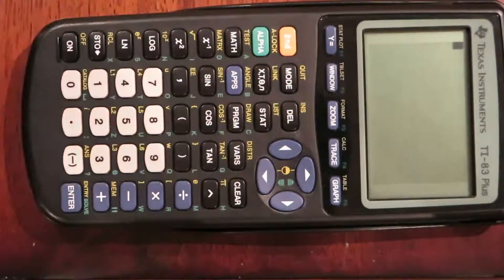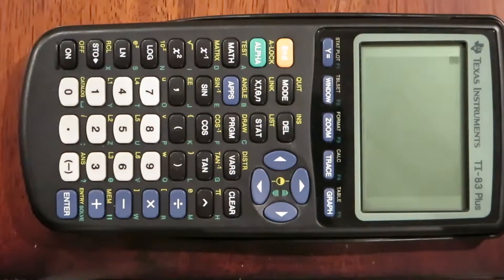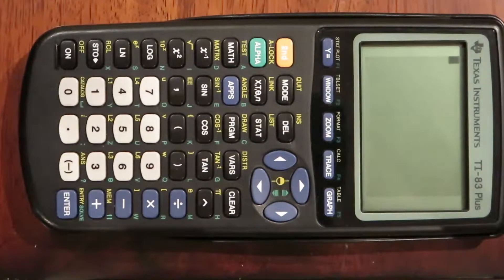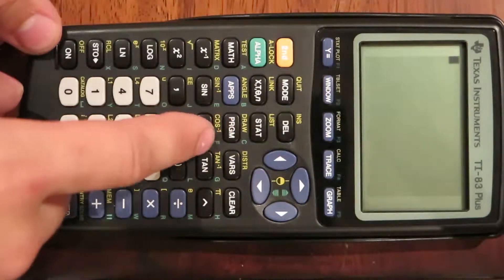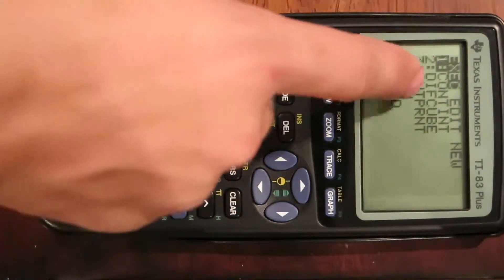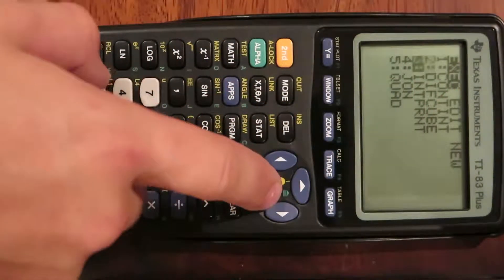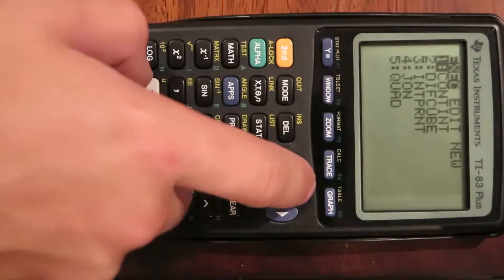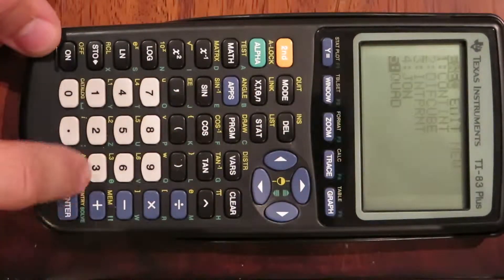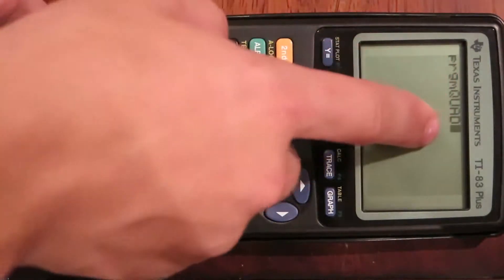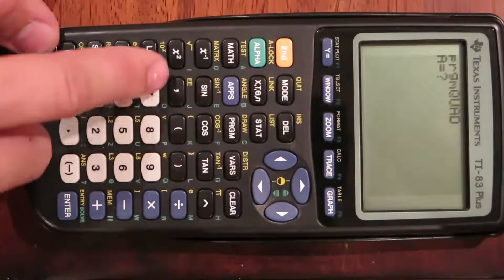Go to second quit, and that will save it automatically. Once we have the function programmed and want to use it, go to program, execute, select QUAD, enter. It will say the name of the program, then prompt for A.